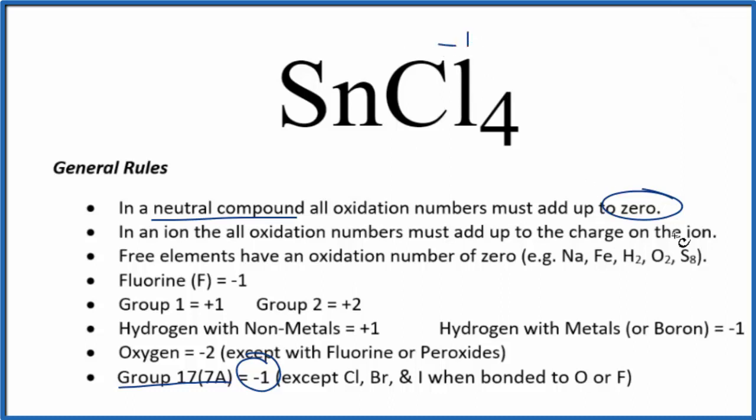So for all of this to equal 0, 4 times minus 1, that's minus 4, the tin has to be positive 4.